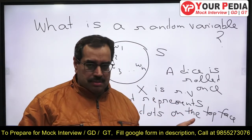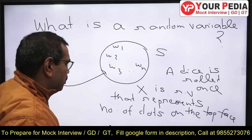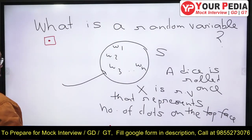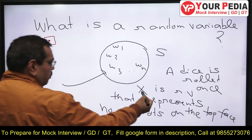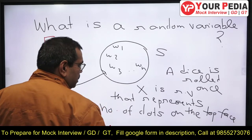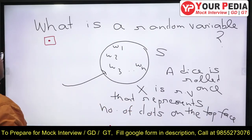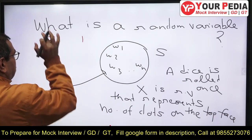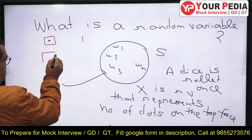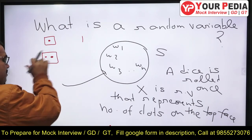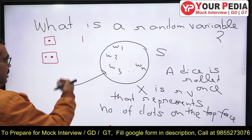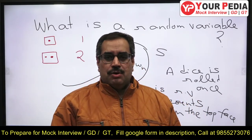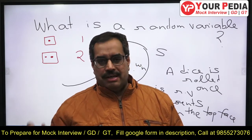Rolling the dice once is the experiment. The possible outcomes — the top face — are the sample points. According to the rule that X represents the number of dots, if the top face shows one dot, the rule assigns the value 1 to that sample point, and so on. So you can get 1, 2, 3, 4, 5, or 6 as the possible values of the random variable — one kind of mapping from outcomes to real numbers.